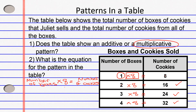Let's write a shorter equation using letters instead of words. Since the word 'boxes' starts with B, I'm going to use B. Since 'cookie' starts with C, I'll use C to represent the number of cookies. So the equation is: B times 8 equals C. This is just a shorthand way of writing out an equation using one letter to represent several words — kind of like texting, it's a shorthand way of doing math.